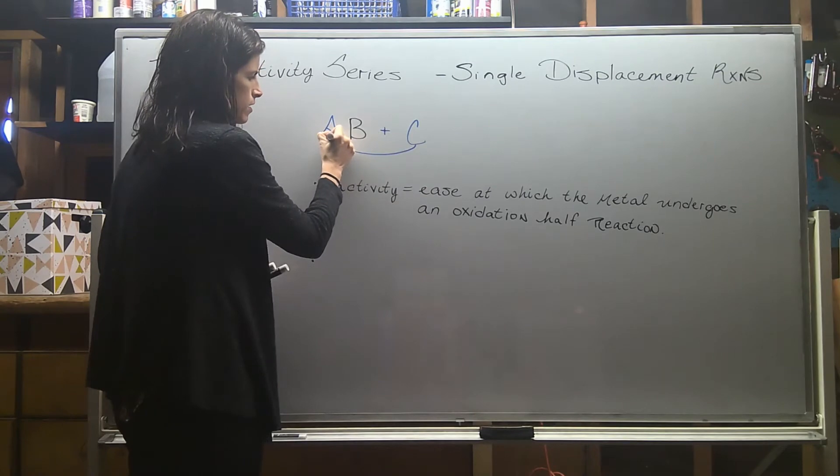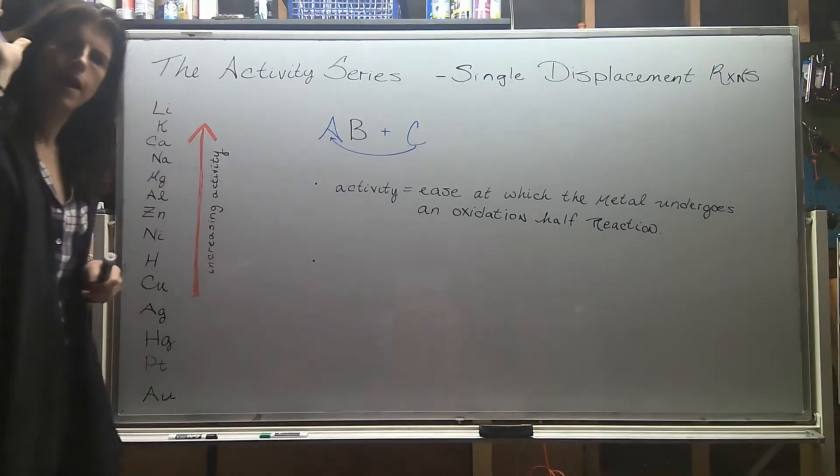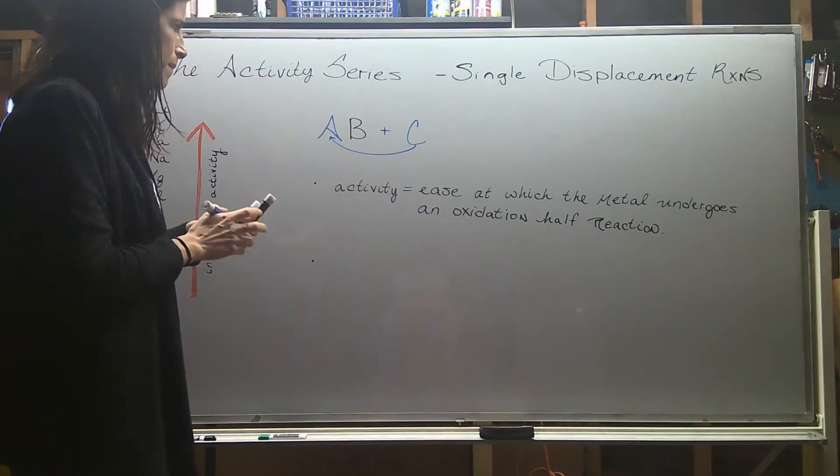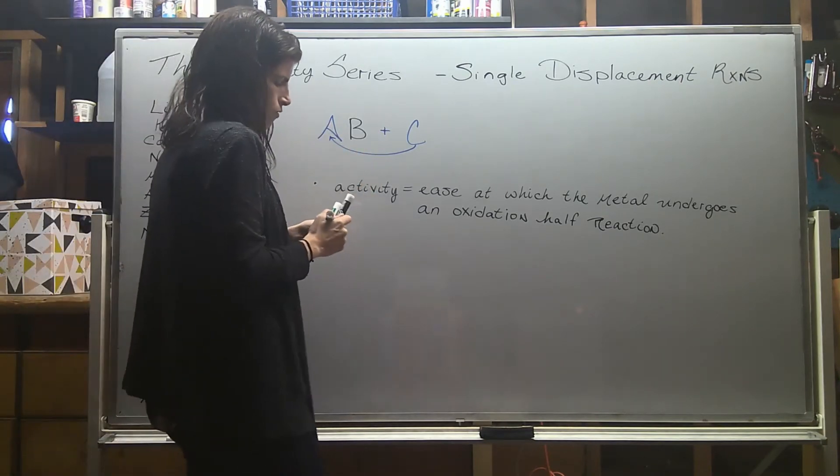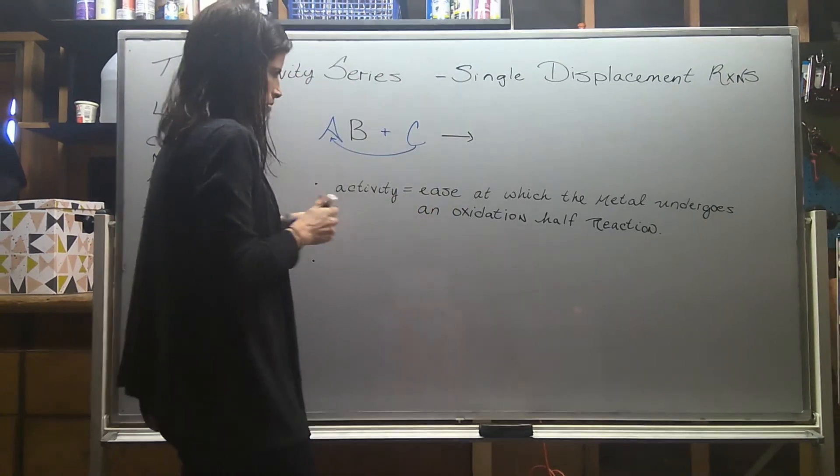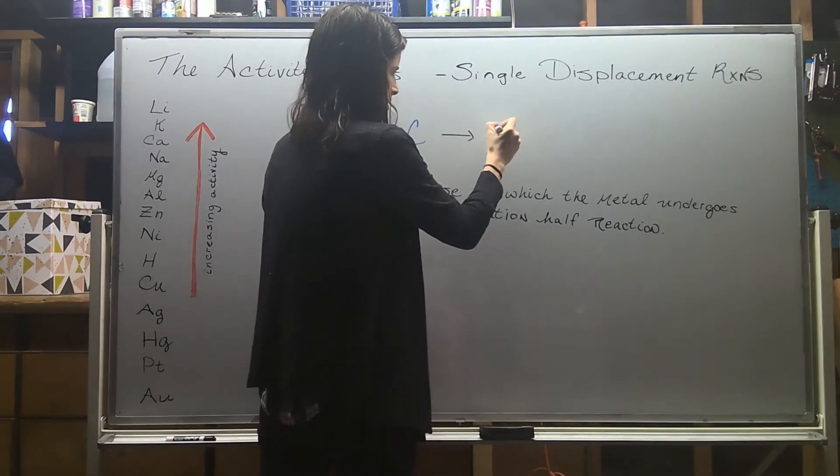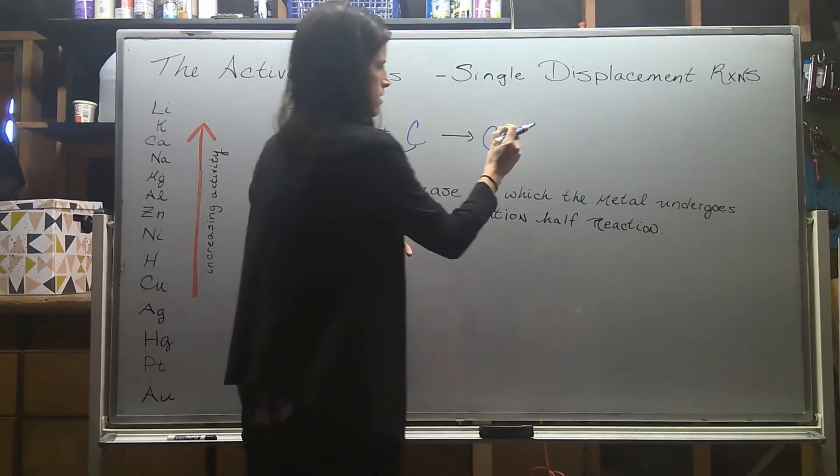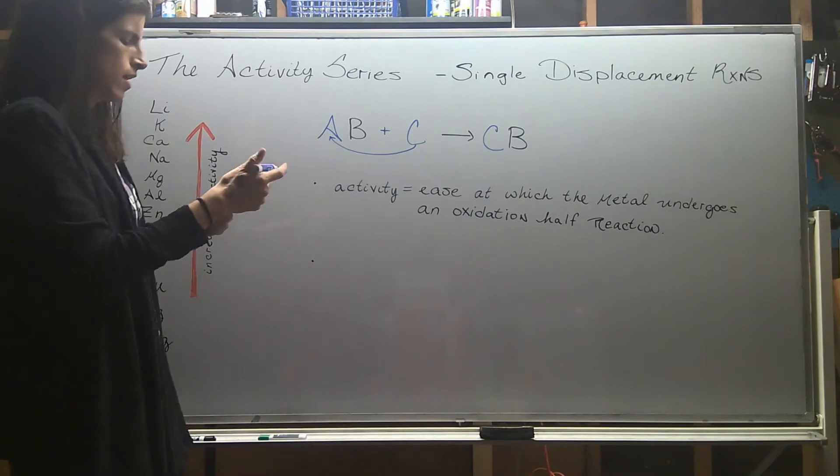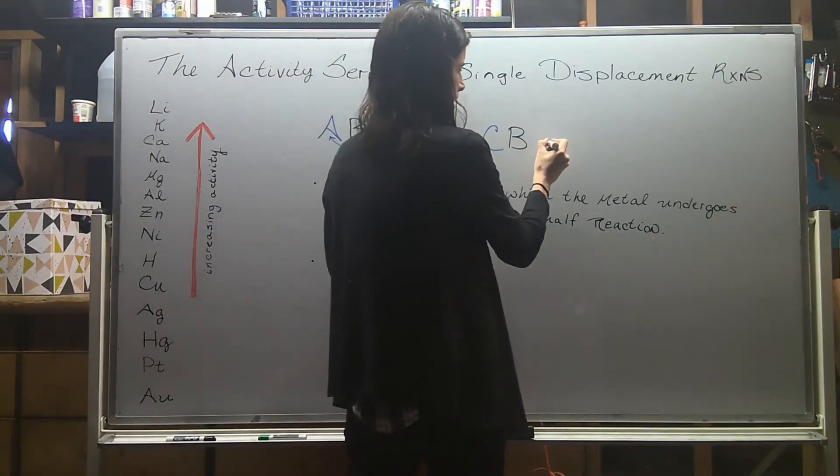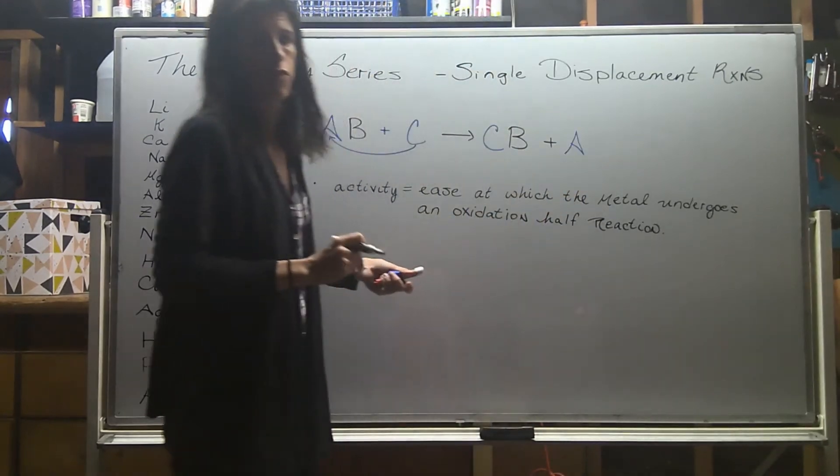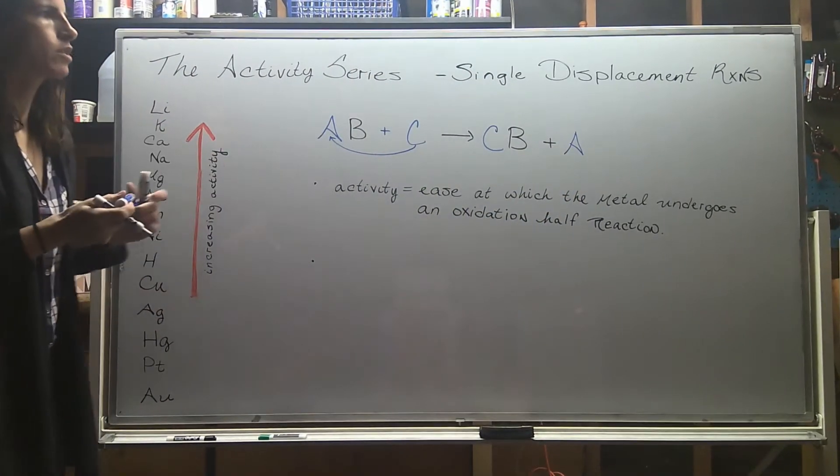So C would come in and, bye-bye A, I want to hook up with B. So if this happens, then they're going to rearrange, and we're going to get C with B, they're together now, and poor A then got kicked out, and A is now by itself. So that's a single displacement reaction.